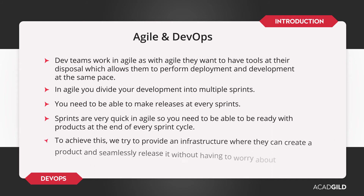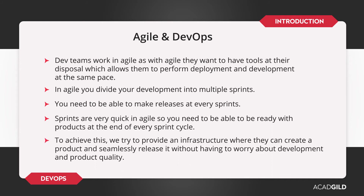Whatever the sprint cycle is, to achieve the target you should provide an infrastructure where developers are able to create a quality product by having a close eye on product development. Seamlessly, during product release and at the end of each sprint, you should be in collaboration with both the development team and operations team to obtain the necessary infrastructure.